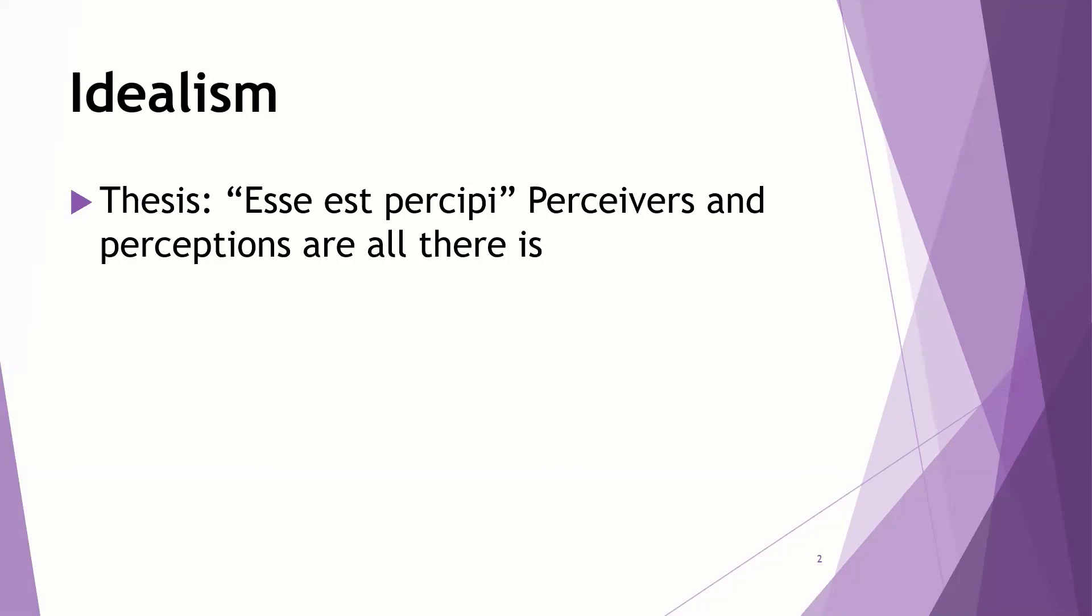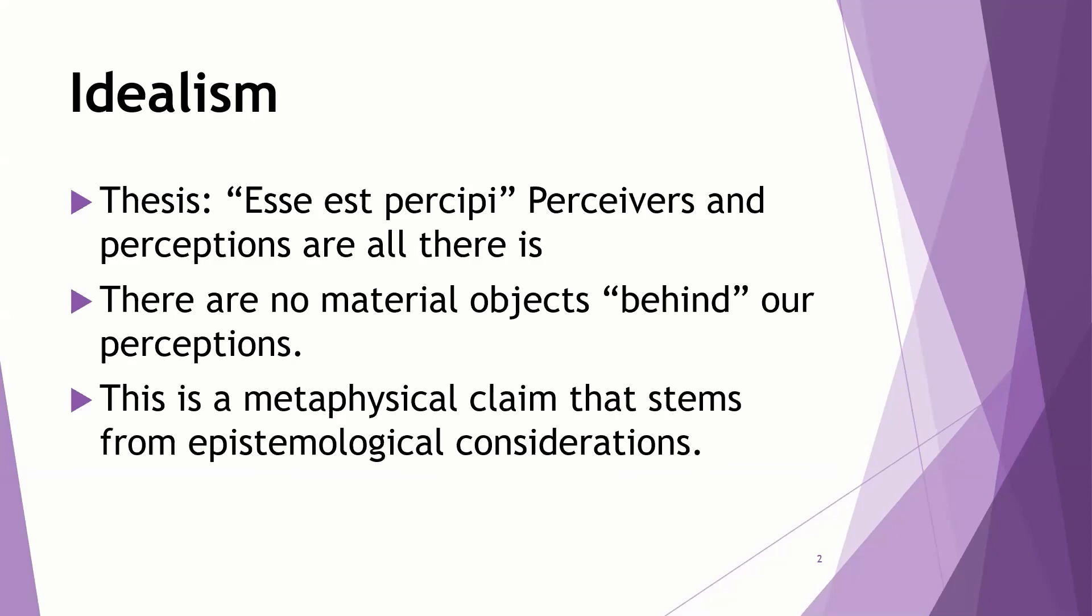So perceivers, minds that are capable of having perceptions, and their perceptions are all that exist. That's it. There are no material objects that are somehow behind our perceptions. All we have are the perceptions and the people doing the perceiving.